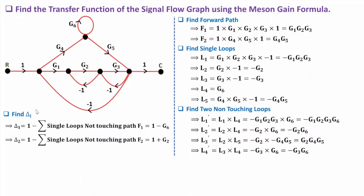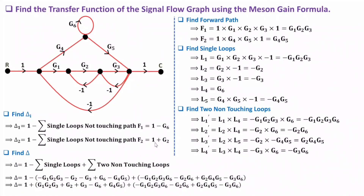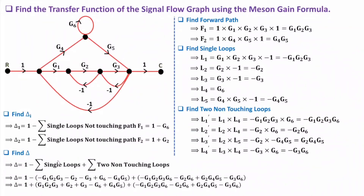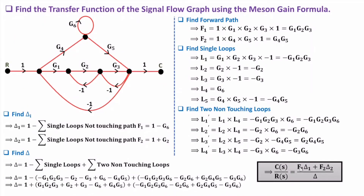Now we have all delta_i values. To calculate delta, we use 1 minus summation of single loops plus summation of two non-touching loops. We do the algebraic sum of single loops subtracted, then add the algebraic sum of two non-touching loop products. Based on all this data, we can identify the transfer function as (F1·delta1 + F2·delta2) / delta. Substitute F1, F2, delta 1, delta 2, and delta into this equation to get the transfer function.